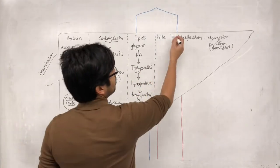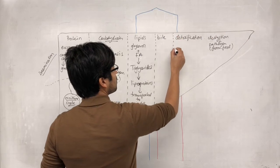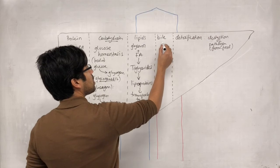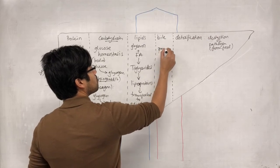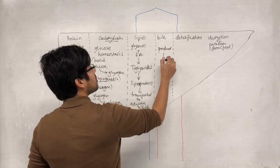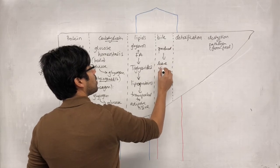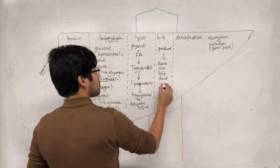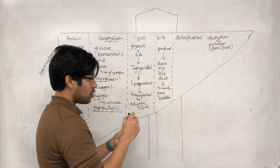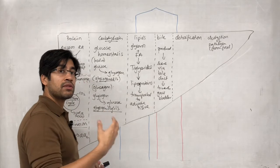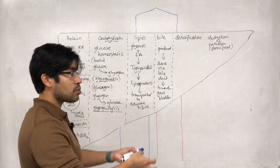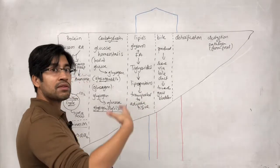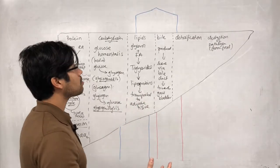The liver is also producing bile. The bile that is produced must leave via the bile duct towards the gallbladder, where it is stored until it's released into the digestive system to help in the digestion of lipids in the diet.